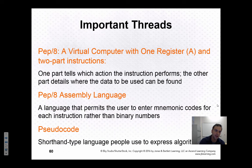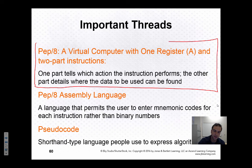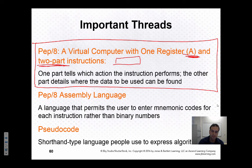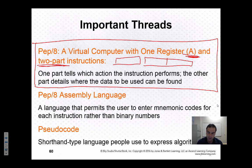The next big thing we talked about is the PEP 8 virtual computer, which has one register — the accumulator — and instructions composed of two parts: one is an opcode or instruction part, and the other is two bytes of data of some sort that go with the instruction.